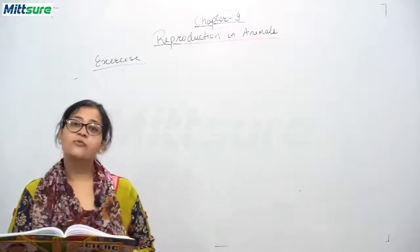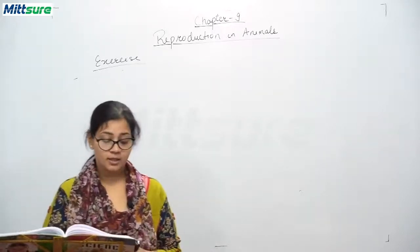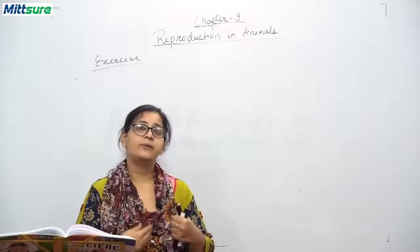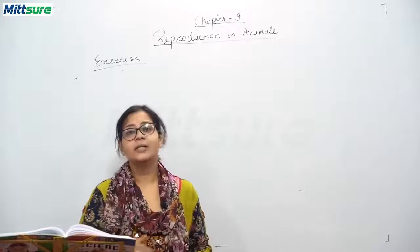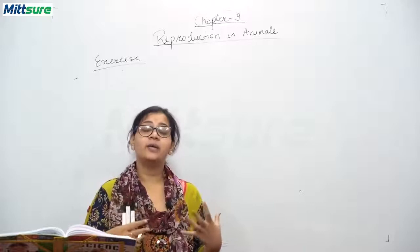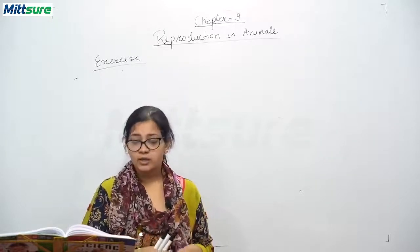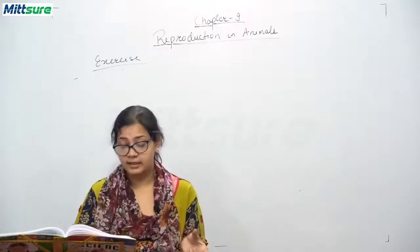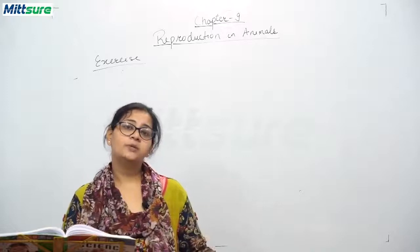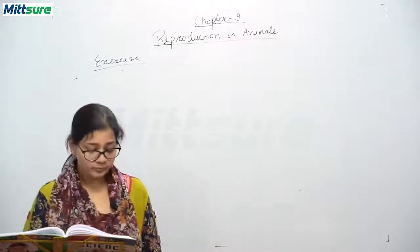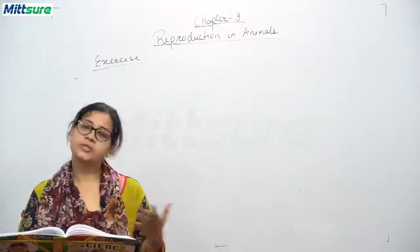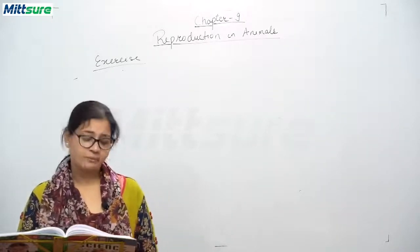Now Section G: answer the following questions. First, why is reproduction important? If there is no reproduction, life forms on earth will die out because every living being has a particular lifespan. If reproduction does not occur, the species will get over. Second, what do you mean by oviparous and viviparous animals? Write the definition of both with examples.